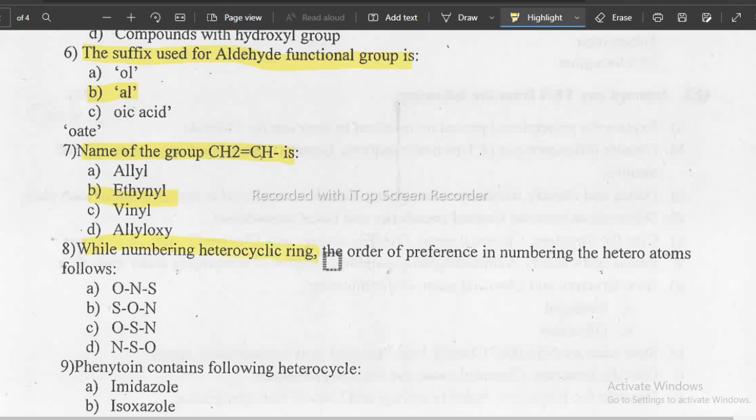While numbering heterocyclic ring, the order of preference in numbering the hetero atoms is as follows. This question is from heterocyclic compounds. How do you give numbering when there is carbon, nitrogen, or functional groups? It is dependent on the preference. The correct answer is oxygen, sulfur, and then nitrogen. The option is C. First preference is oxa, that is oxygen, then thia, that is sulfur, and third is aza. You should always give first preference to oxygen.